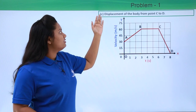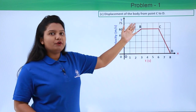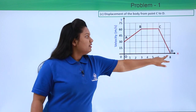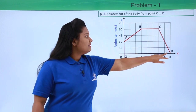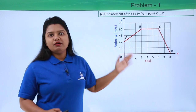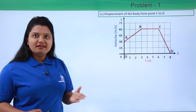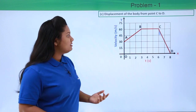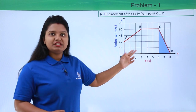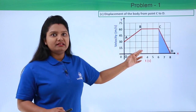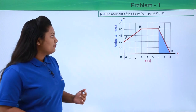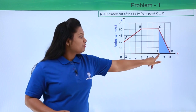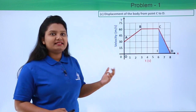Now let's solve the third part: find the displacement from point C to point D. The segment CD on the graph is a triangle, so we need to find the triangular area under C to D, shown shaded in blue. Let this point touching the x-axis be point I.